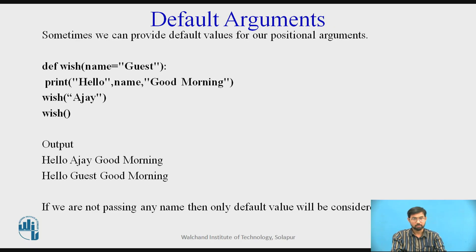Next one is default arguments. Sometimes we can provide default values for our positional arguments. We define wish(name equals guest), print hello name, good morning.